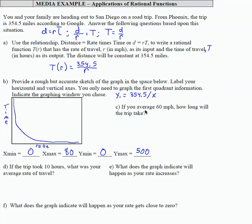So question c says if you average 60 miles per hour, how long will the trip take? So that 60 miles an hour, that's an r value. So I want to evaluate my function t with an input of 60. I'm going to take 354.5 divided by 60. And if I divide that on my calculator, 354.5 divided by 60, I get 5.9 hours for the trip. So 60 miles an hour is probably pretty good speed, considering stopping and all of that. So 6 hours from Phoenix to San Diego seems pretty reasonable here.